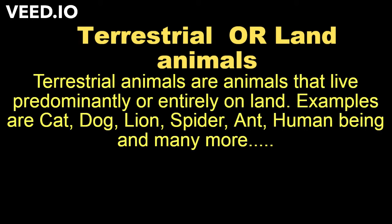Terrestrial animals are animals that live predominantly or entirely on land. Examples are cat, dog, lion, spider, ant, human being and many more.